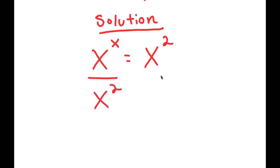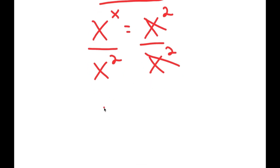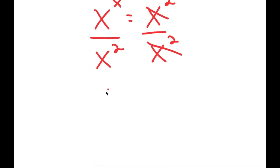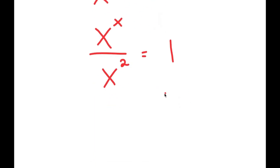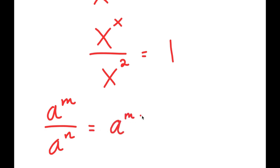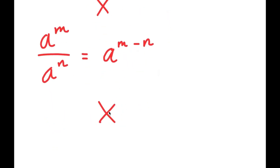So I have x to the power of x over x to the power of 2 is equal to x to the power of 2 over x to the power of 2. And x to the power of 2 over x to the power of 2 cancels out. Now, if I have something in the form a to the power of m over a to the power of n, this is equal to a to the power of m minus n. So x to the power of x over x to the power of 2 equals x to the power of x minus 2, which is equal to 1.